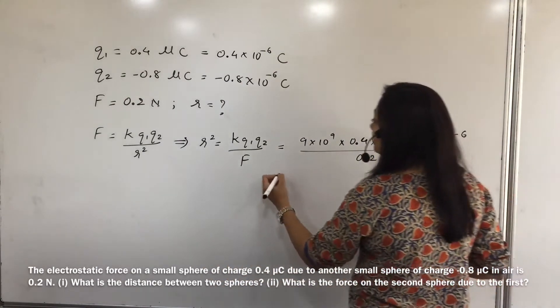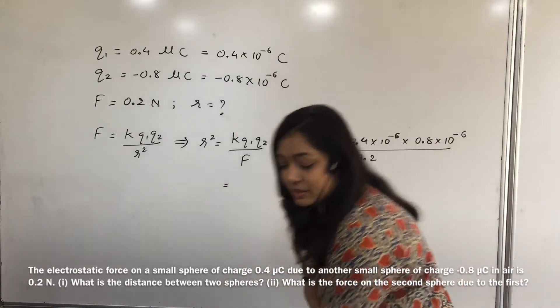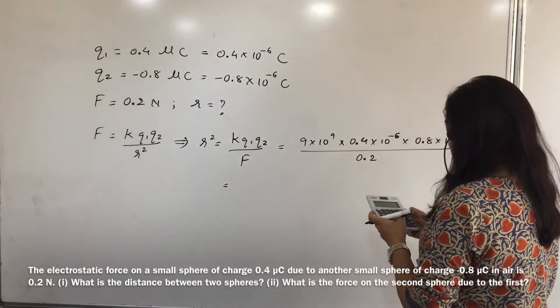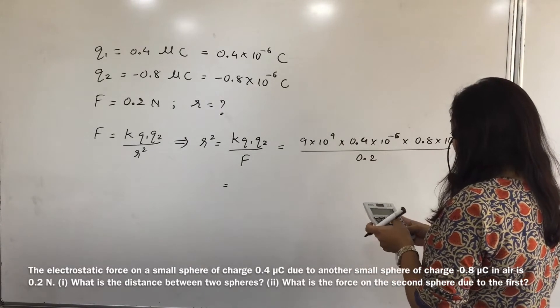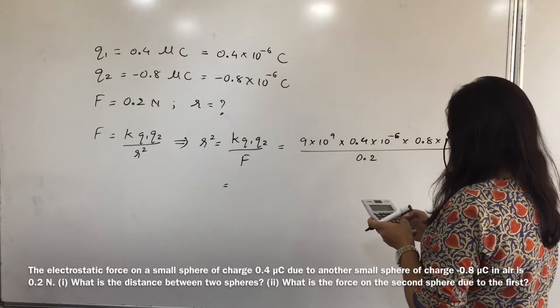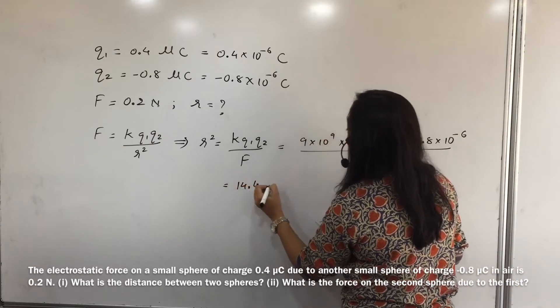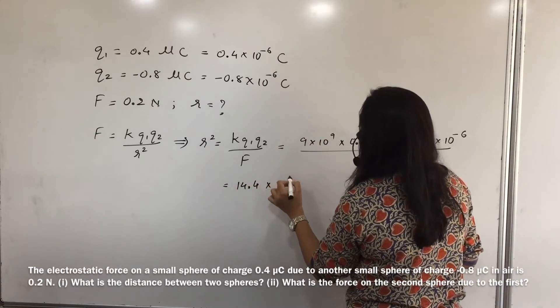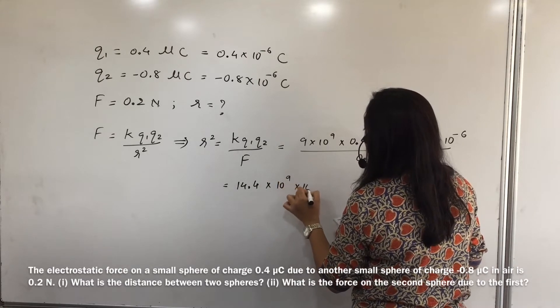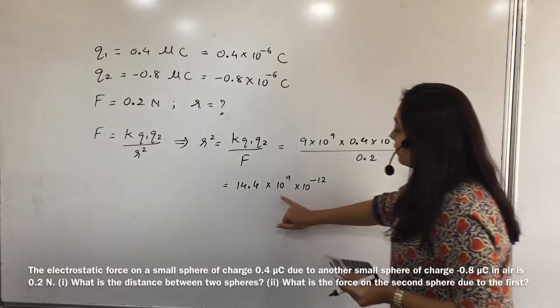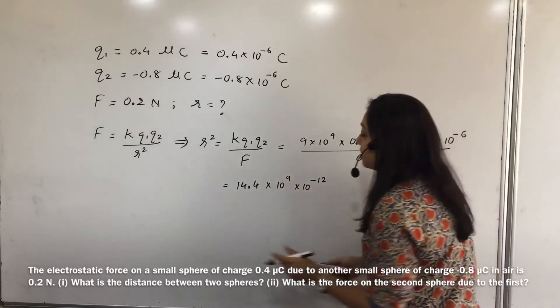Okay, chalo. Calculate kare. Mathematics zindabad. Okay. 9 into 0.4 into 0.8 divided by 0.2, that gives us 14.4 into 10 to the power. Yaha pe 9 hai and 10 to the power minus 6 minus 6, ho kya, minus 12 ho gaya.